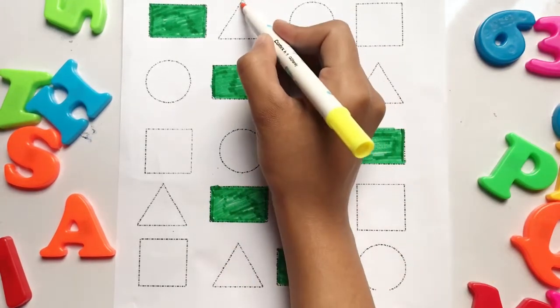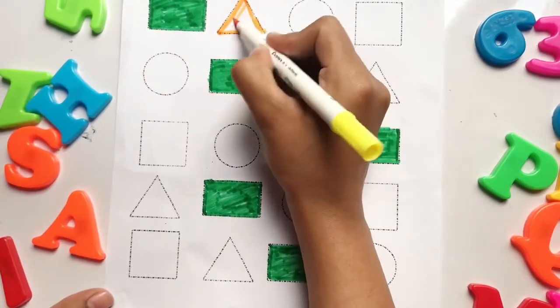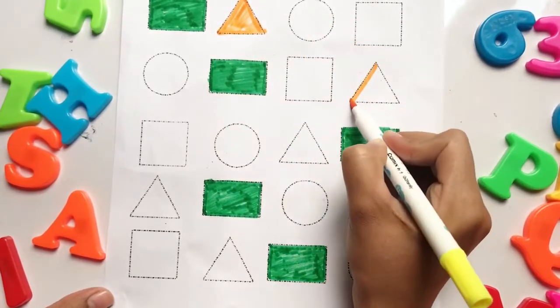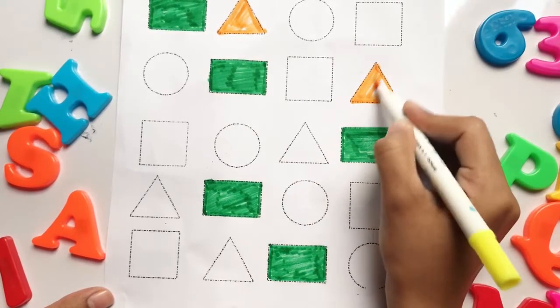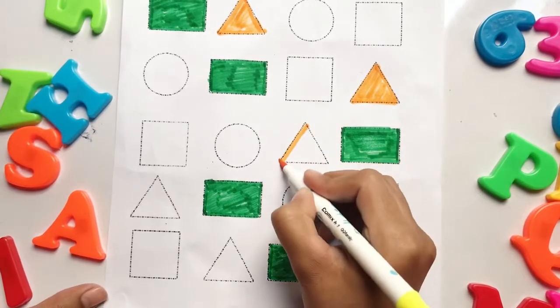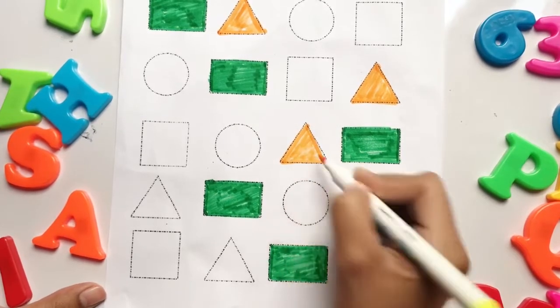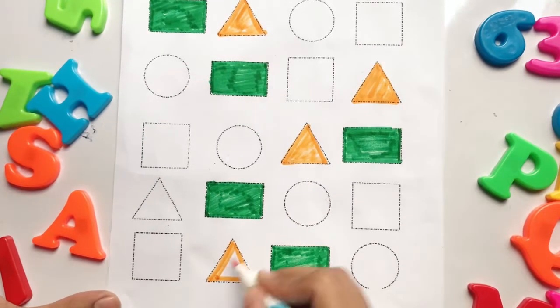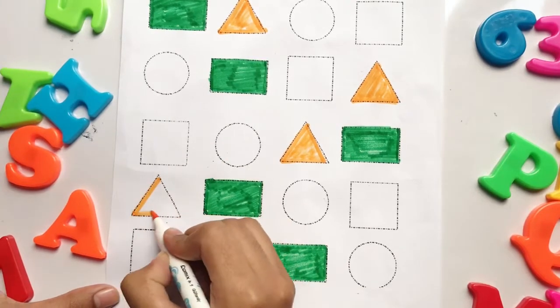Orange triangle, let's fill orange color in all the triangles. One, two triangles, three triangles, four triangles, five triangles.